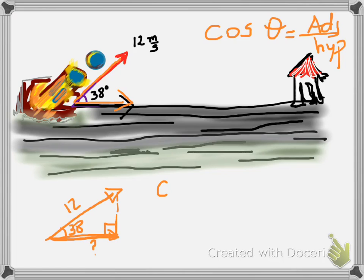Cosine of the angle, our angle is 38 degrees, is going to equal the adjacent, which we already said happens to be the x component of the velocity. So that's why I'm going to call it Vx.